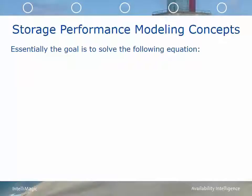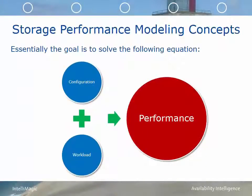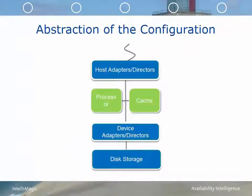In this slide, we'll talk briefly about storage performance modeling concepts. The goal of storage performance modeling is to solve the following equation: configuration information plus workload information equals performance. The following picture is an abstraction of the configuration of a disk storage system. On the front end, you have host adapters, or in some cases called directors. Within the controller, you also have processor resources as well as cache resources. On the back end, you have a device adapter, or disk adapter, and the connected disk drives.